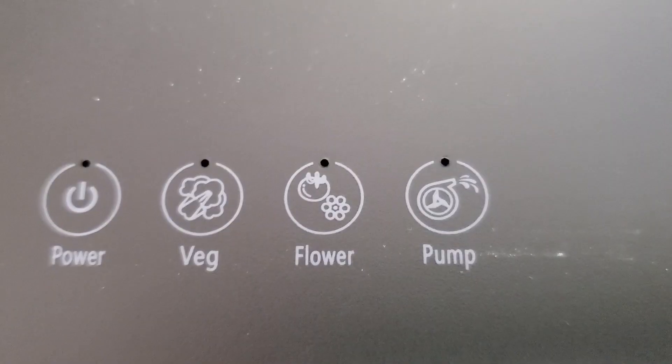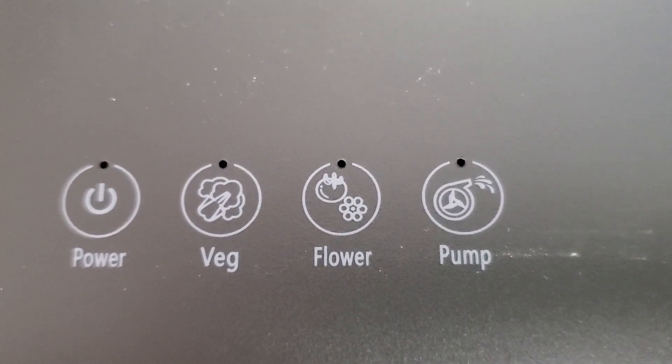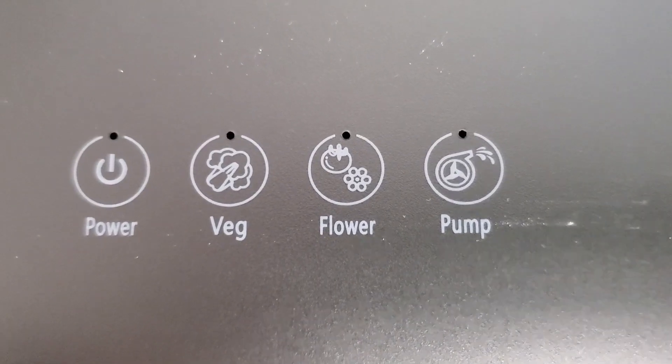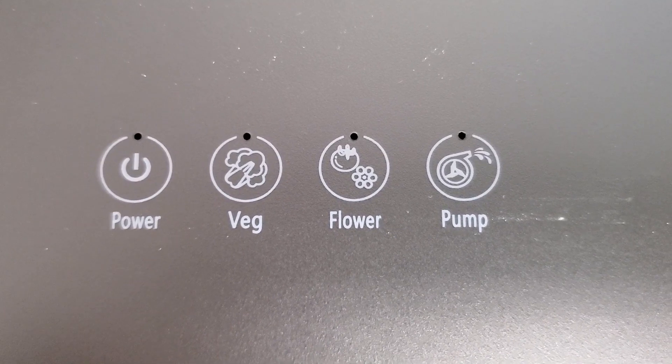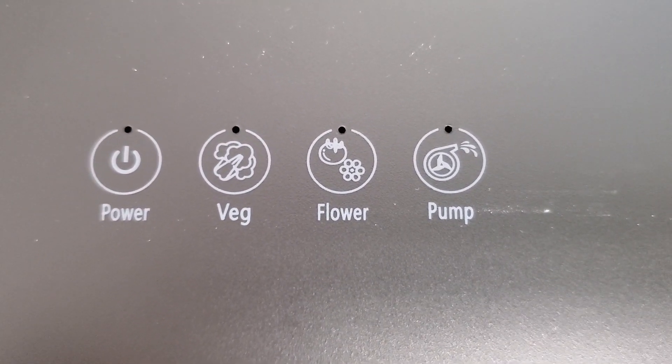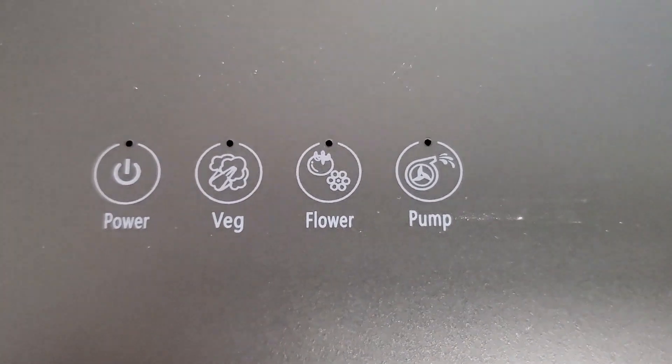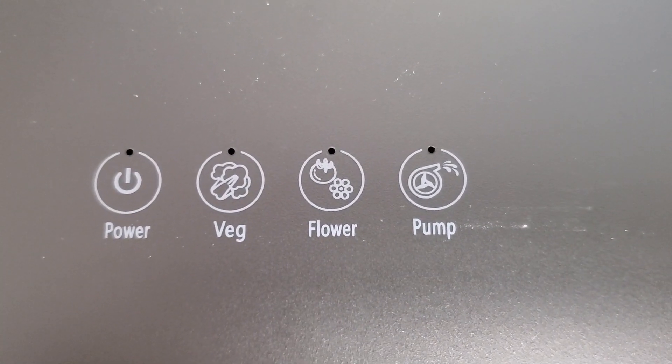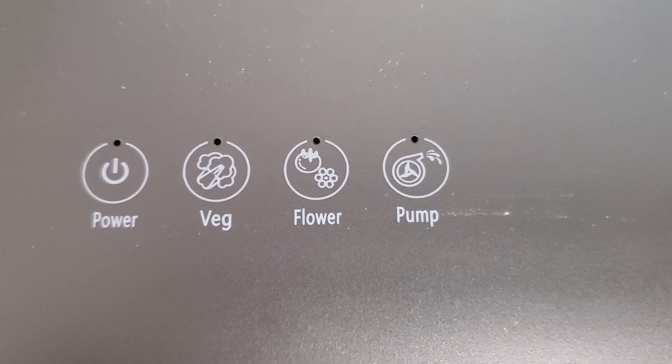Looking on the top of the hood, the power button, of course, is to turn on the unit. Veg and flower relate to the light. The lights run on 16 hours per day with an 8-hour cycle of darkness. Of course, flowering requires more wattage, and so that's what that particular setting is for.